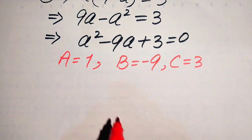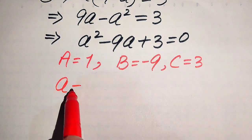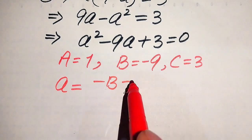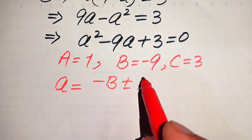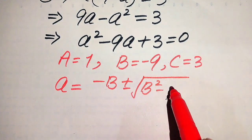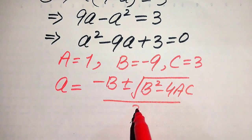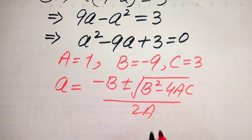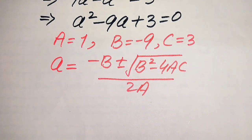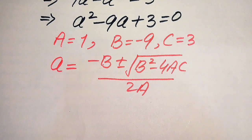The quadratic formula is: x equals minus b plus or minus square root of b squared minus 4ac, divided by 2a. This is our quadratic formula and now we substitute the values of a, b, and c.